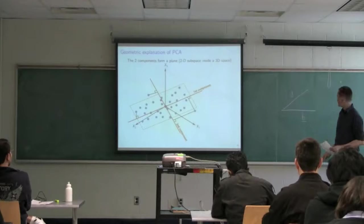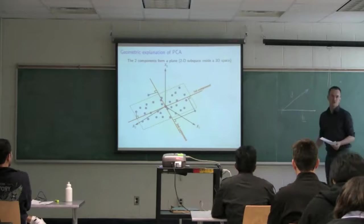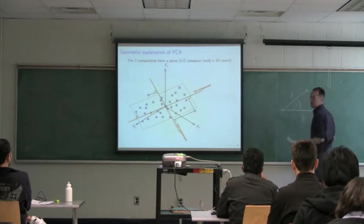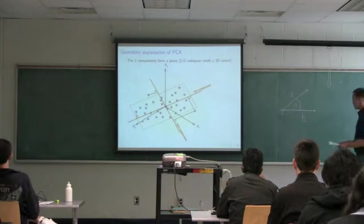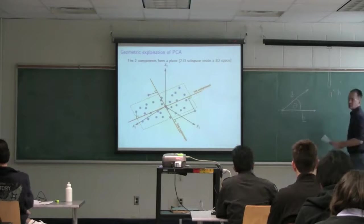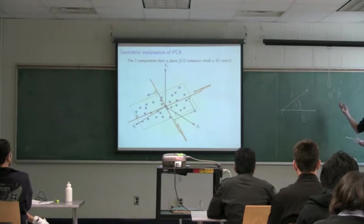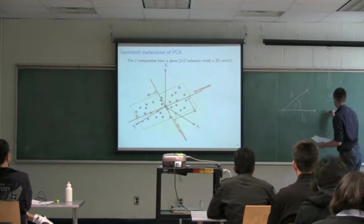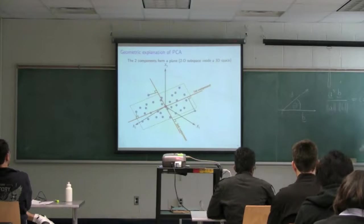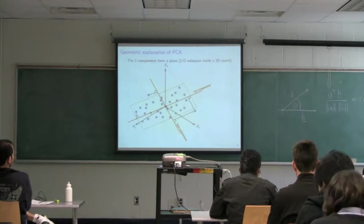If you have two vectors a and b starting from some origin in some coordinate system, with an angle between them, then a-transpose-b is a scalar value. Divided by the length of vector a and the length of vector b, that equals the cosine of the angle. This is something you should recall from a first-year math class.